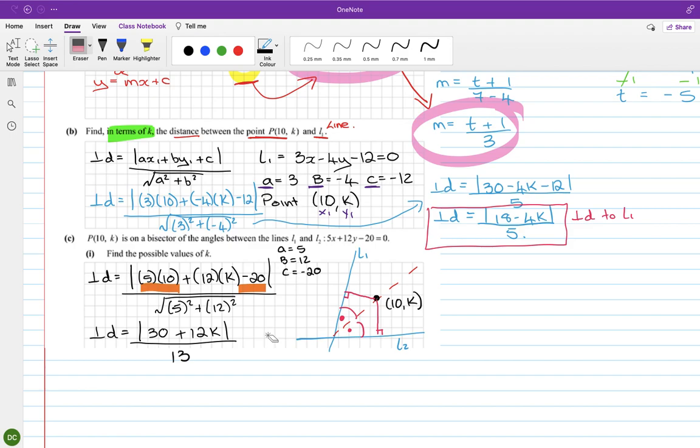Okay, so because the 10k is on the perpendicular bisector, it is the same distance from both. So I can let the perpendicular distance from the point to L1, which was (18 - 4k)/5, equal the perpendicular distance to L2, which is (30 + 12k)/13.